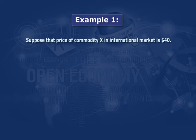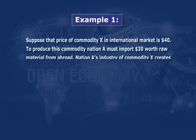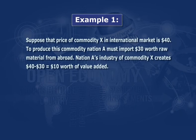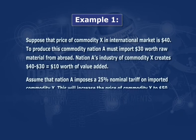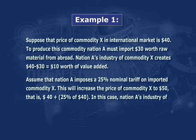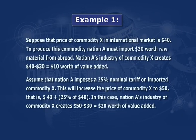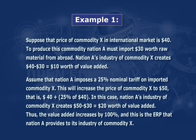Let us take an example. Suppose the price of commodity X in the international market is $40. To produce this commodity, nation A must import $30 worth of raw material from abroad. Nation A's industry of commodity X creates $40 minus $30 = $10 worth of value added. Assume that nation A imposes a 25 percent nominal tariff on imported commodity X. This increases the price of commodity X to $50 (that is $40 plus 25% of $40). Nation A's industry then creates $50 minus $30 = $20 worth of value added. Thus, value added increases by 100 percent, and this is the ERP that nation A provides to its industry for commodity X.